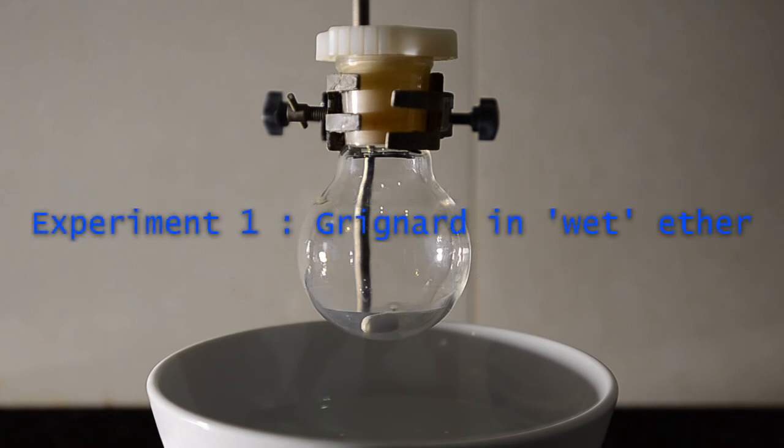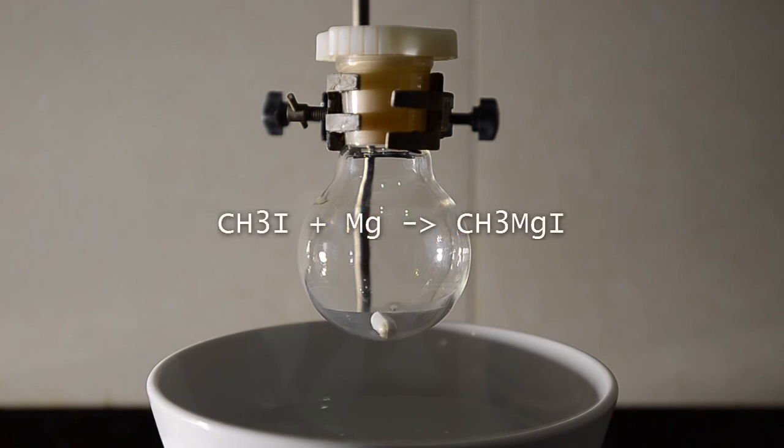So we attempted to make a Grignard reagent using methyl iodide but using some extreme conditions. As a control we dried the 100 ml flask in an oven at 150 degrees C for an hour, then removed it and stoppered it while it cooled.